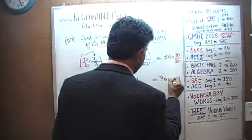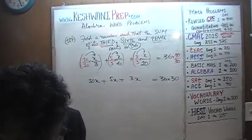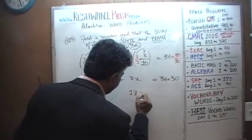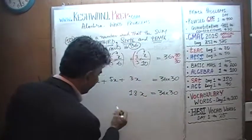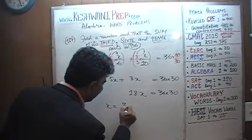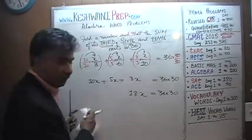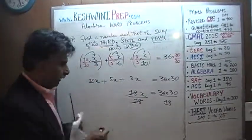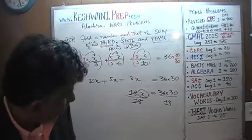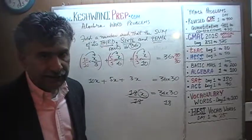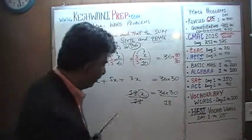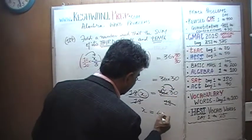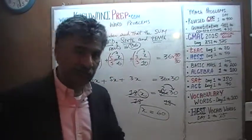5 plus 10 is 15, and 15 plus 3 is 18. So 18X equals 36 times 30. Dividing both sides by 18: 36 divided by 18 is 2, since 18 times 2 is 36. So X equals 2 times 30, which is 60. That is what we claim the answer is.